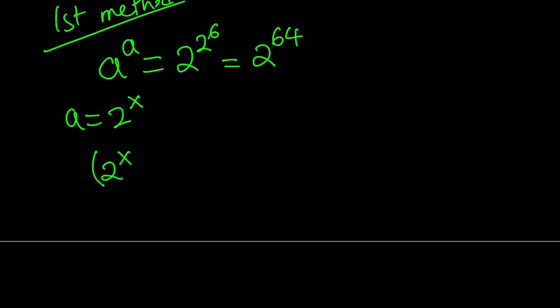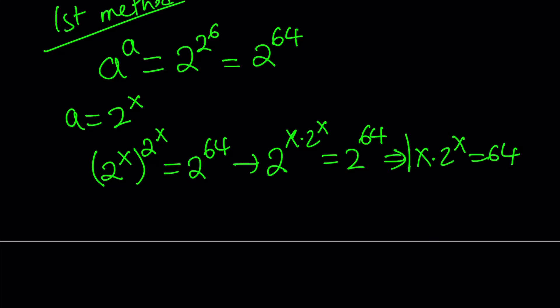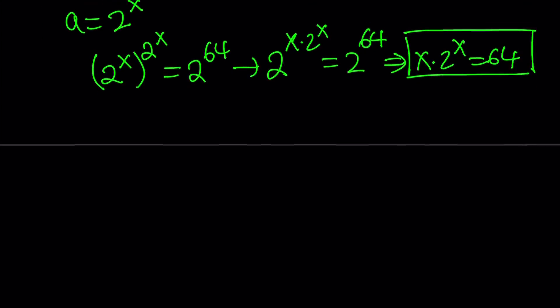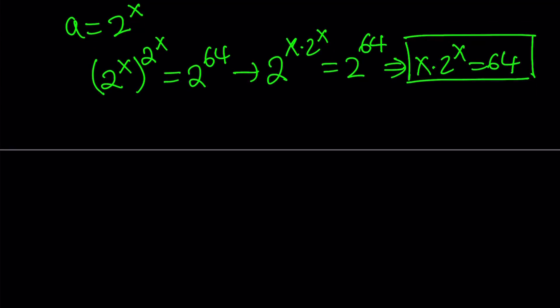(2^x)^(2^x) = 2^64. And now from here, we multiply the exponents, so we get 2^(x·2^x) = 2^64, which means x·2^x = 64. Great. So this is what I wanted to get. Since the bases are equal, so are the exponents.